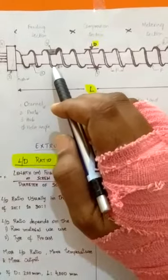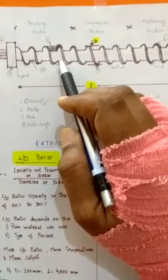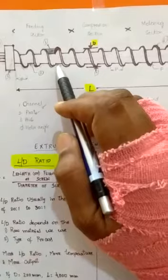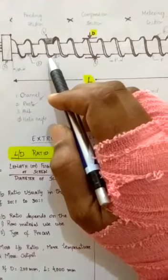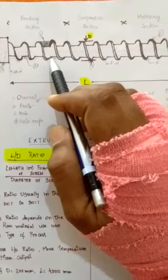This is the channel depth. Channel depth is nothing but the distance between the root and the flute edge.